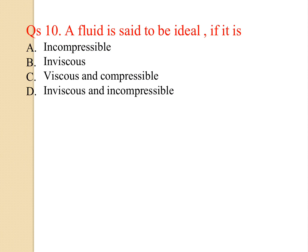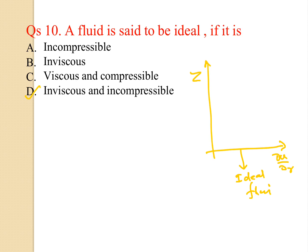A fluid is said to be ideal if it is — (a) incompressible, (b) inviscid, (c) viscous and compressible, (d) inviscid and incompressible. D is correct. Ideal fluid is inviscid and incompressible.